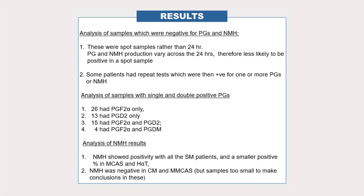Thinking about those that were negative for either prostaglandins or N-methylhistamine: they were generally spot samples rather than 24-hour collection samples, and when these were repeated as a 24-hour collection they were positive, suggesting that we had missed the release of the substances with a spot sample.